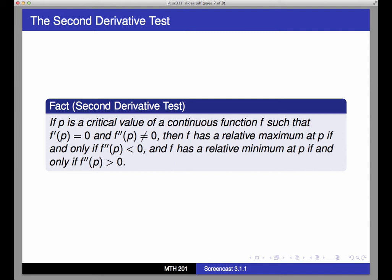In other words, if p is a critical number for f, but not a critical number that makes the derivative undefined, just that makes the derivative equal to 0, and if the second derivative of f at p is not 0, then f of p is a local maximum if f is concave down at p, and a local minimum if f is concave up at p.